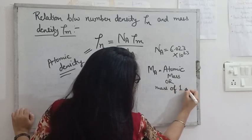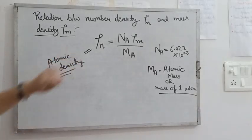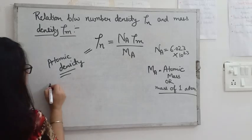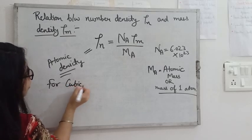Now after this, if we find the number density value for a particular case, like say simple cubic crystal structures, for cubic crystal structures.